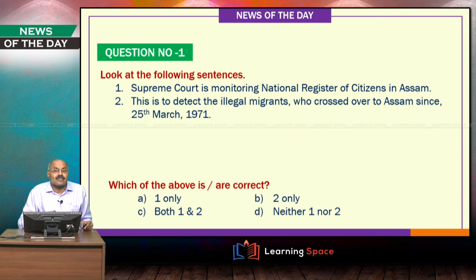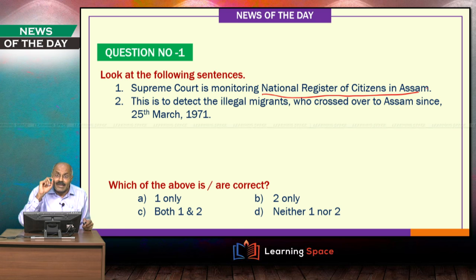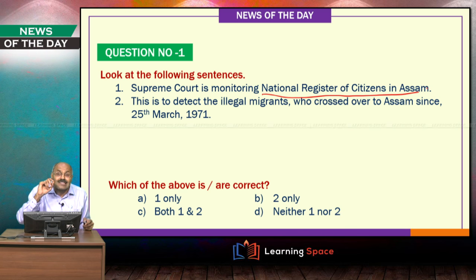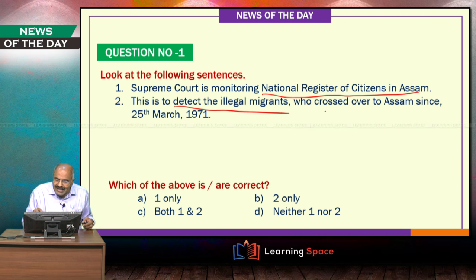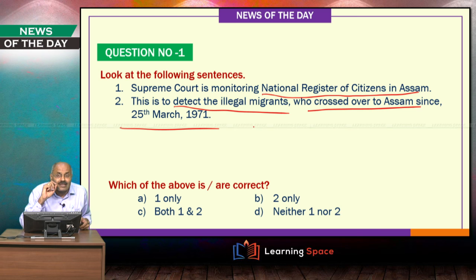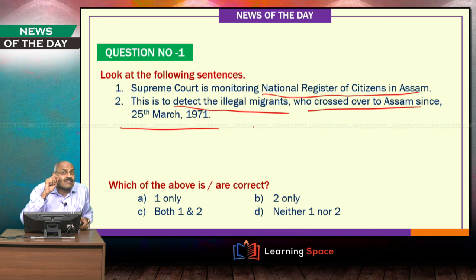Look at the following sentences. The Supreme Court is monitoring the National Register of Citizens in Assam. Assam is the state where this NRC is being prepared, and the Supreme Court is monitoring it. It is a part of the Assam Accord, basically to detect illegal migrants who crossed over to Assam since 25th March 1971. Both sentences are correct — NRC pertains to Assam, and it is to detect illegal migrants since that date.